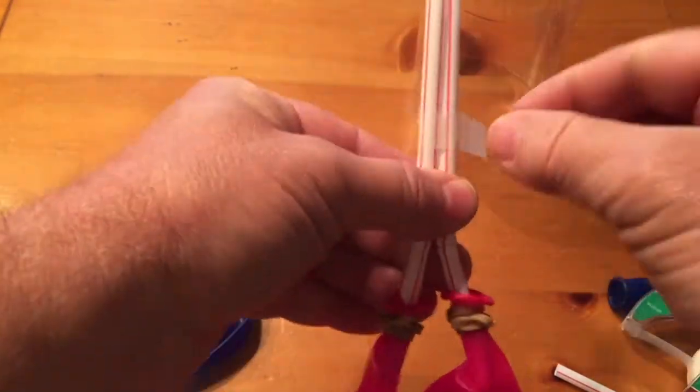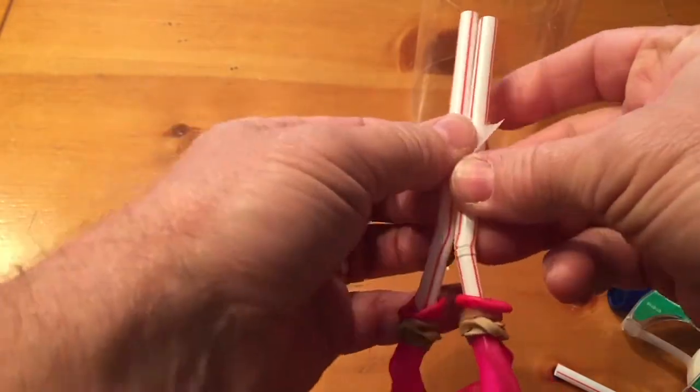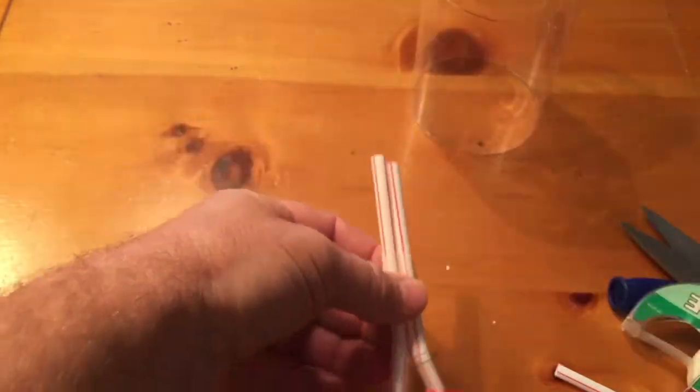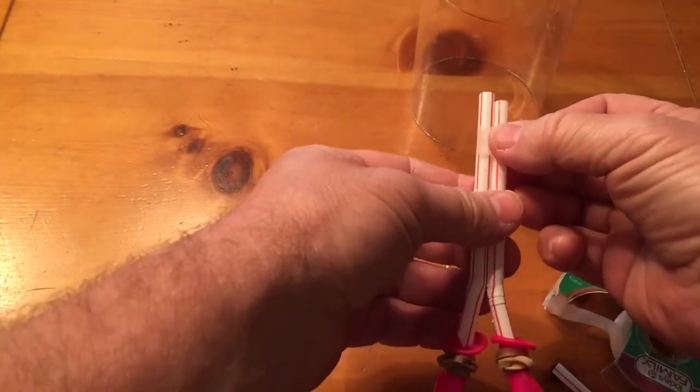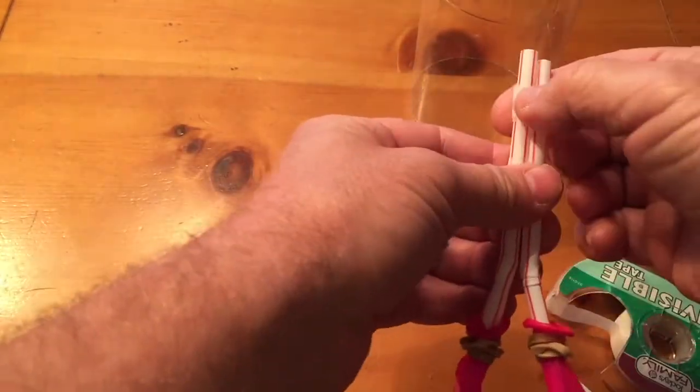I did one piece of tape towards the bottom, and then I'll come back and do one more piece of tape here on the top, holding the straws in place when we get ready to put it into the bottle.